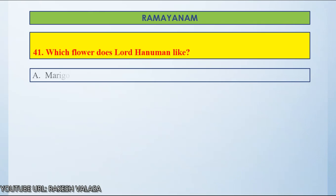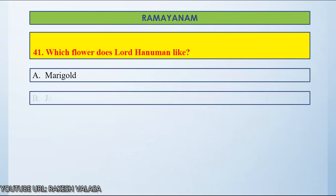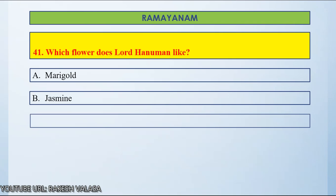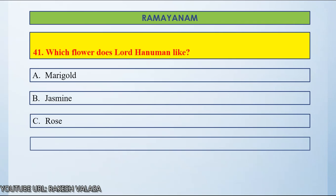Option A, Marigold. Option B, Jasmine. Option C, Rose. Option D, Lavender. Let us count and start.